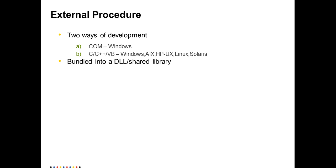An external procedure is developed using a high-level language and it is developed outside of the Integration Service. There are two ways it can be developed: a COM external procedure, which is available on Windows platform only, and an Informatica external procedure using C, C++, or VB, which is available on Windows, AIX, HP-UX, Linux, and Solaris. Once you develop your procedure in a high-level language, it can be bundled into a DLL for Windows or a shared library for UNIX, and once placed appropriately under INFA_HOME, it can be invoked by the Integration Service at runtime.